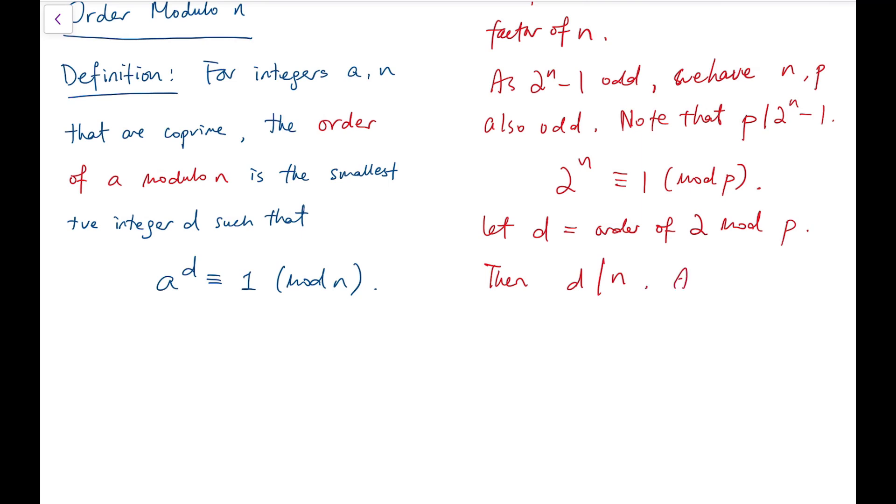And at the same time, by Fermat's little theorem, this number d divides the number p minus 1. But now from this, we can tell that d must be at most p minus 1.